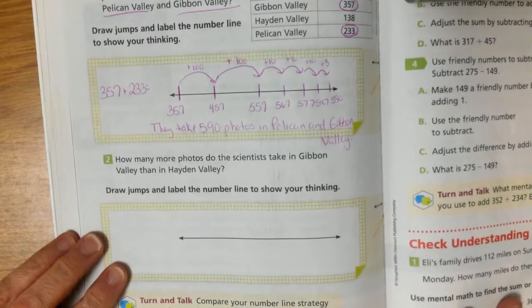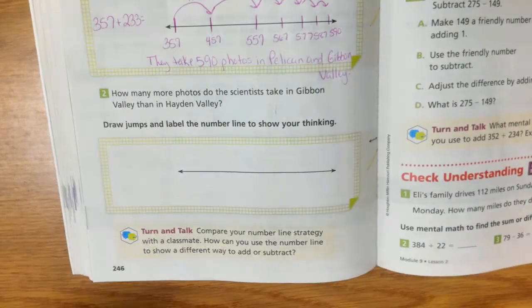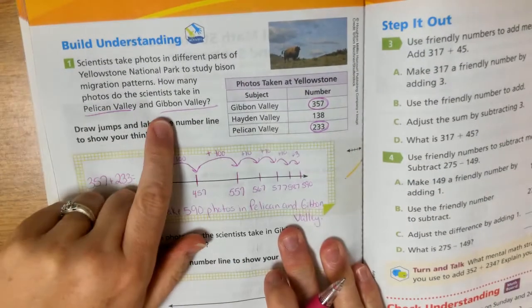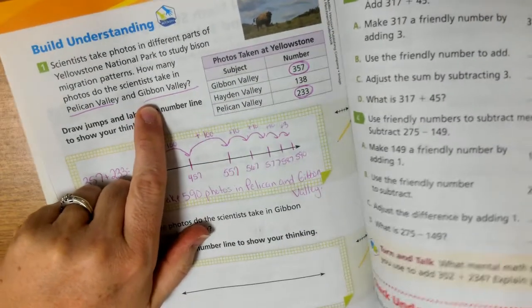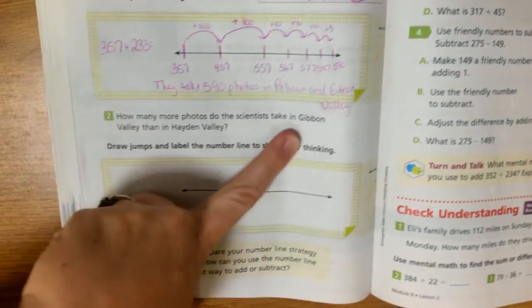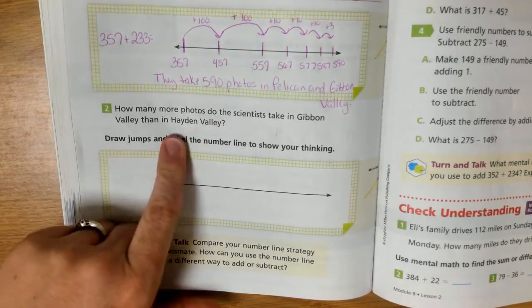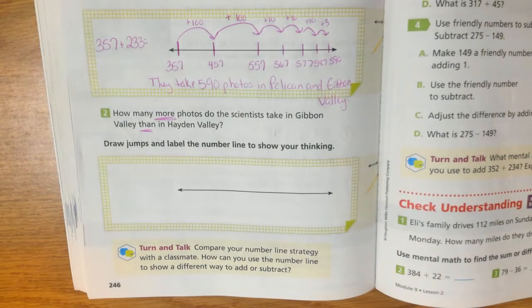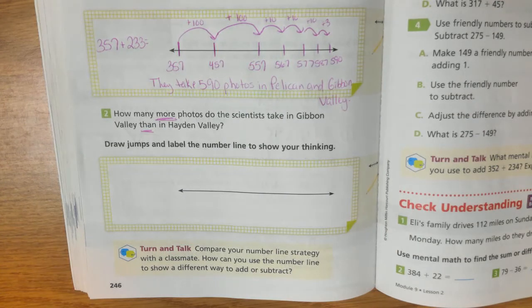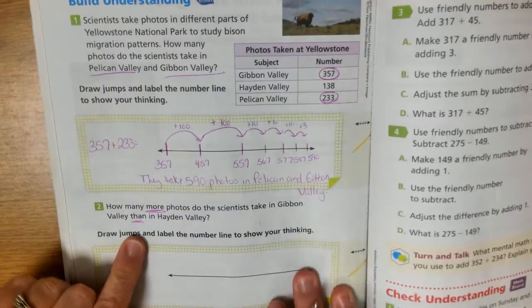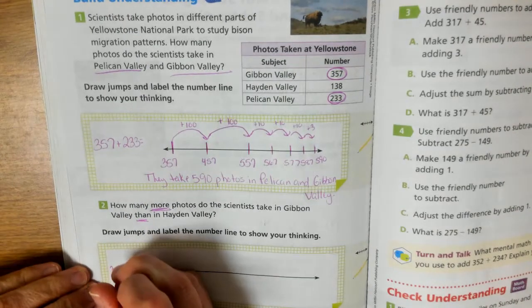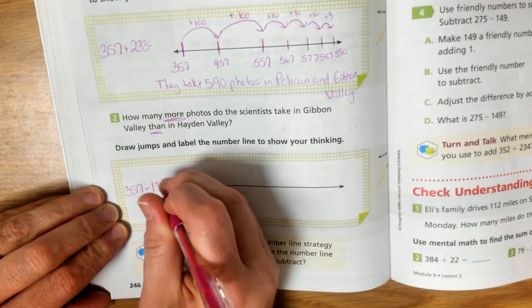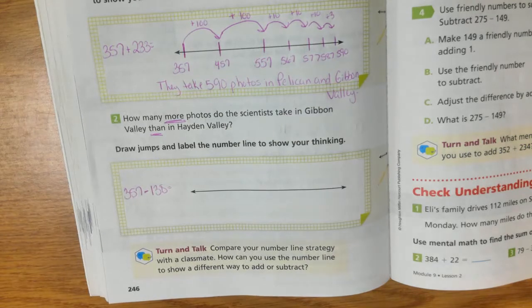Next question. How many more photos do the scientists take in Gibbon Valley than in Hayden Valley? So this is asking me a little bit different question. This wanted to know how many photos they take in these two combined, right, these two together. Now it wants to know these two valleys, the difference, right? How many more photos do they take in Gibbon Valley than in Hayden Valley? When you see those words like that, that means to subtract. So we want Gibbon Valley, which is 357. And we're going to be subtracting Hayden Valley, which is 138. 357 minus 138.